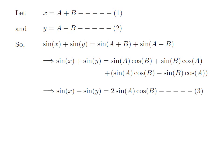Further simplification of the above expression gives us sin of x plus sin of y equals 2·sin(a)·cos(b), since the sin(b)·cos(a) terms cancel out, leaving sin(a)·cos(b) plus sin(a)·cos(b). Let's label this result as equation 3.